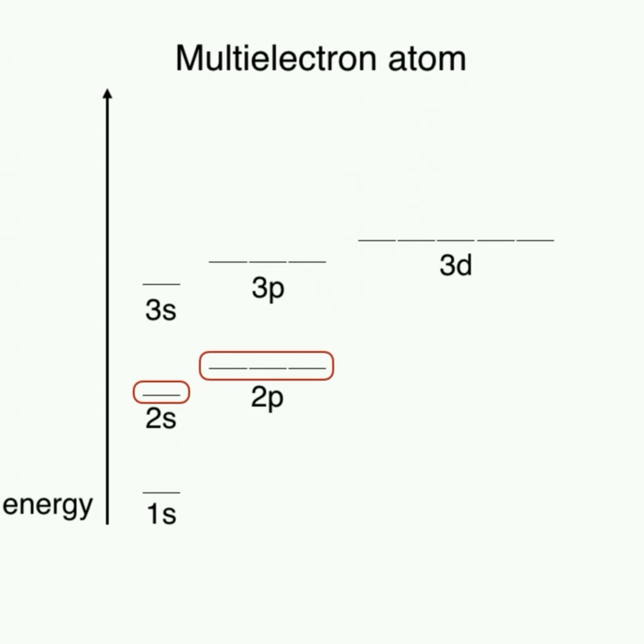For example, a 2p orbital in a multi-electron atom has a lower energy than a 2p electron in a hydrogen atom.